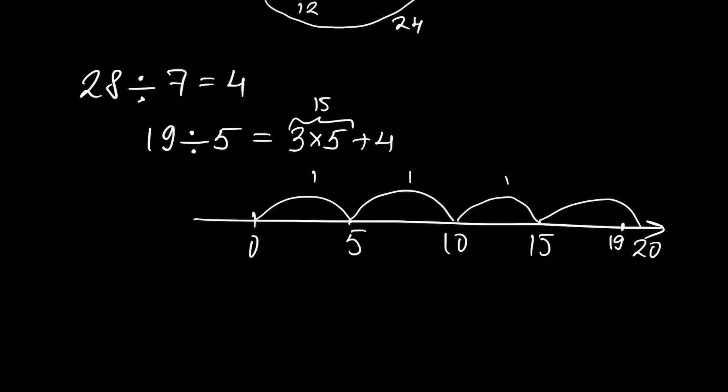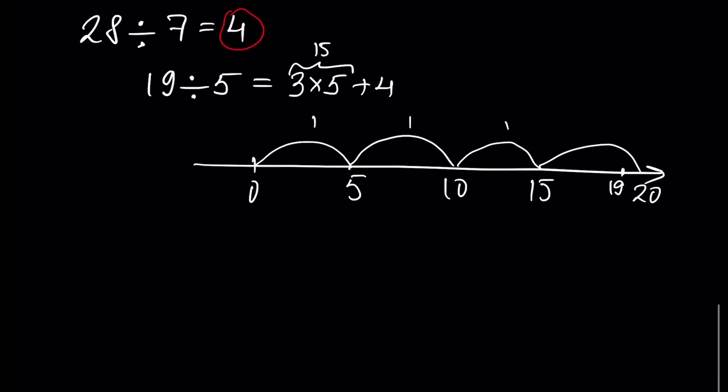But if the quotient is a whole number — as in the example 7 divides 28 with a result of 4, which is a whole number — then we can say that 28 is a multiple of 7, and 7 is a divisor of 28.